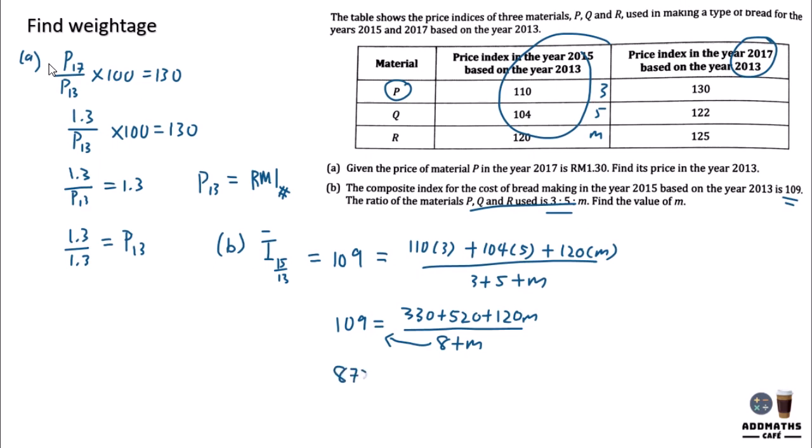You have 872 plus 109M equal to 850 plus 120M. So bring all the values to one side. This is what you have, and the unknown to one side.